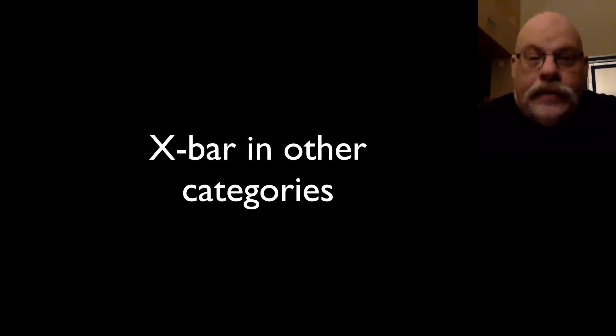In the last video, we looked at how phrase structure rules don't make the correct predictions about the internal structure of noun phrases. Instead, we saw that we needed a more rich set of rules that would get intermediate structure into the noun phrase to account for the one replacement test. In particular, we proposed three rules: